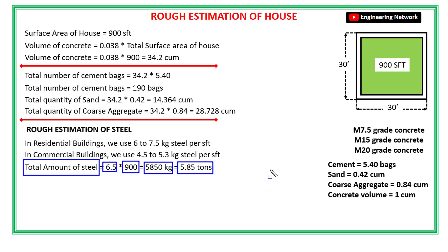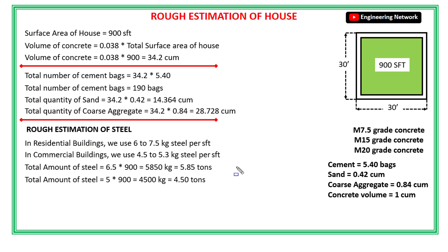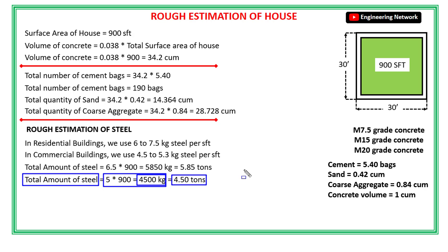In case of commercial buildings, the amount of steel used is around 4.5 to 5.3 kg per square foot. If we assume this building is a commercial building and take 5 kg per square foot, then the total amount of steel will become 4,500 kg, which is equal to 4.5 tons. So this is how you can do the rough estimation of steel in a house or building.